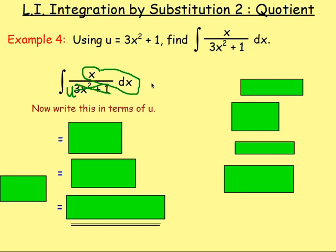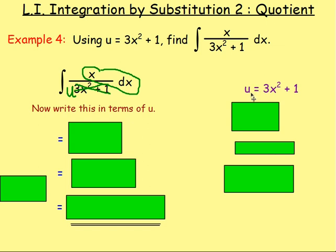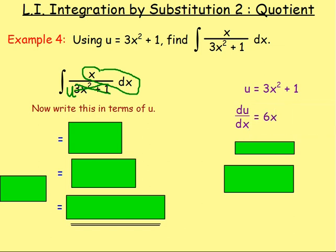So to do that we go to the side over here and we write down our substitute: u equals 3x squared plus 1. And then we differentiate it. So we're differentiating u with respect to x. Because we differentiate u we have du, and because it's with respect to x we have dx. Differentiating u with respect to x gives us 6x. We want u on one side, x on the other, so multiply both sides by dx. Therefore du equals 6x dx.